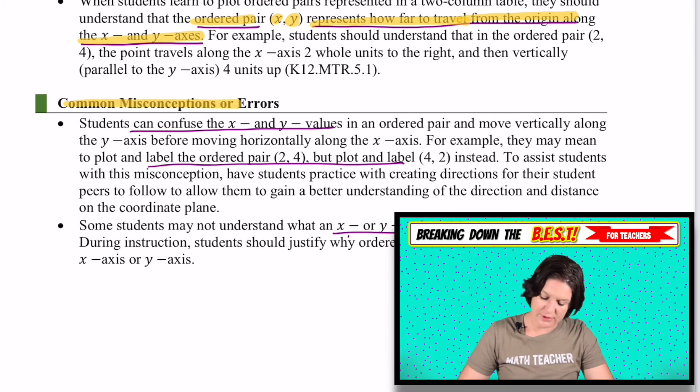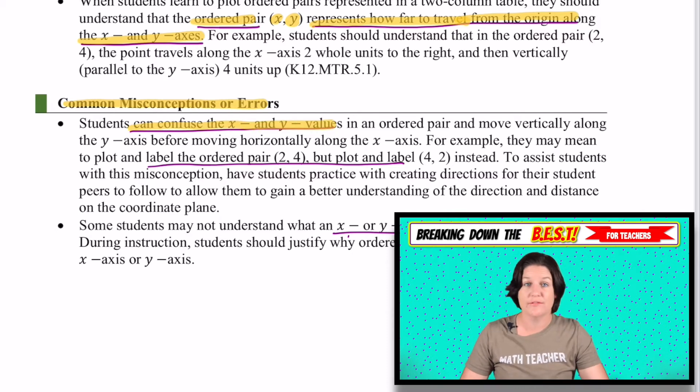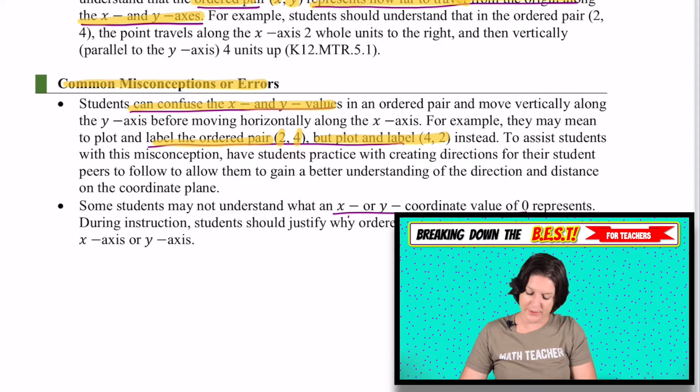All right, here's the common misconceptions or errors. It says that students can confuse the x and the y values. That's definitely true. They might go up first and then over. For instance, labeling the ordered pair as (2, 4), but really plotting the point that's (4, 2). So that's where they tend to get mixed up a little bit.